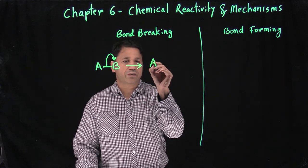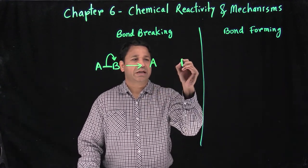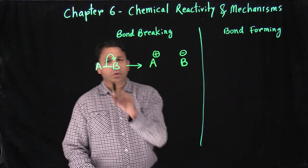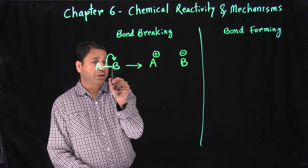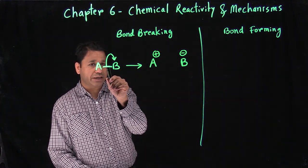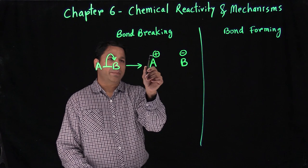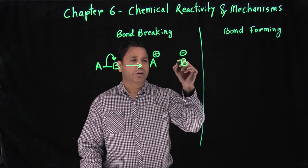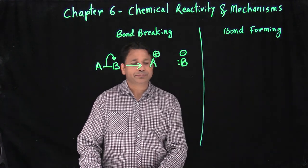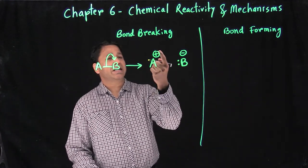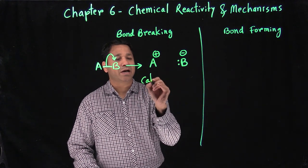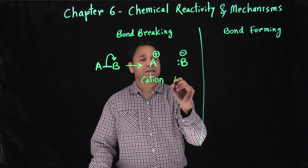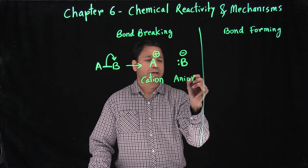I'm taking electrons away from A and placing that electron pair on B. So A is losing electrons — that means A should get a positive charge. And B is getting electrons, so B should get a negative charge. Anything with a positive charge is called a cation, and anything with a negative charge is called an anion.